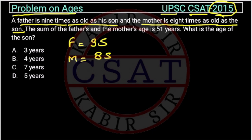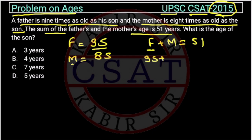Now we have converted the language into equations. The sum of the father and the mother's age is 51 years. So, what is given? The total of mother and father's age is 51. So, f = 9s and m = 8s. Putting these in: 9s + 8s = 51, which gives 17s = 51, so s = 3.